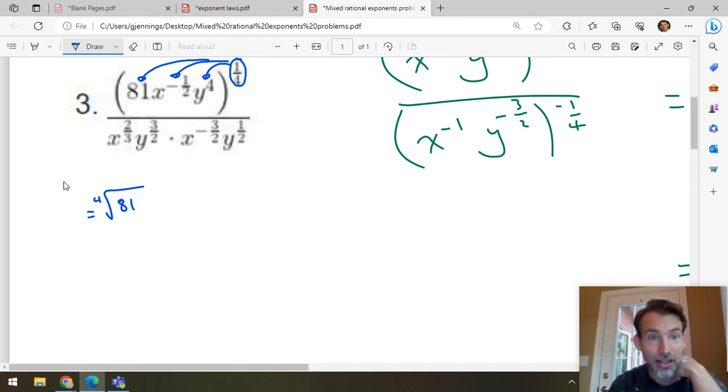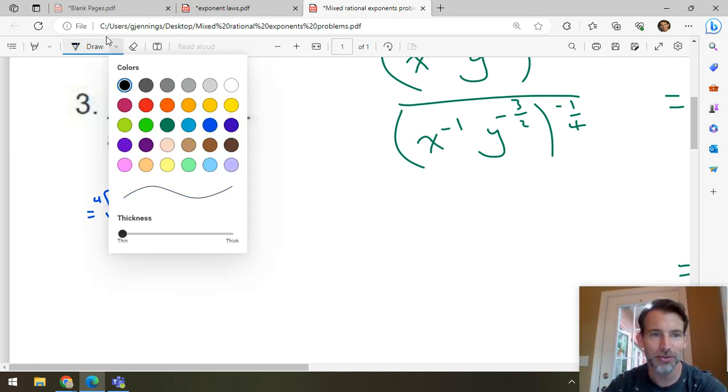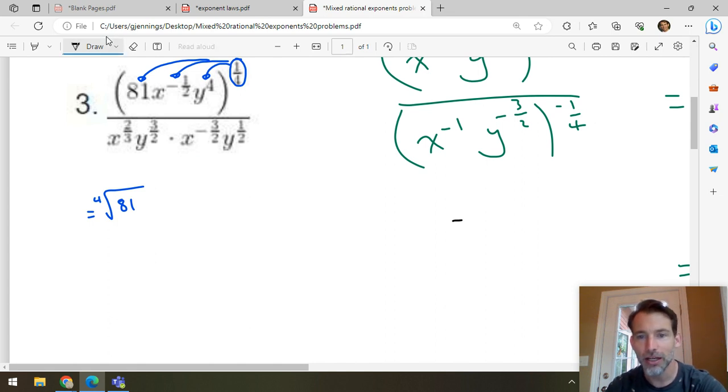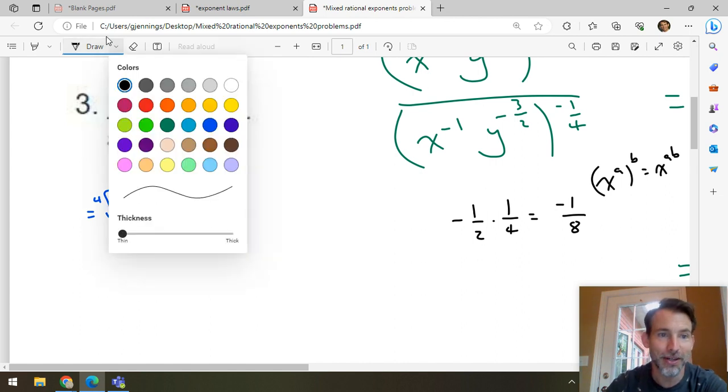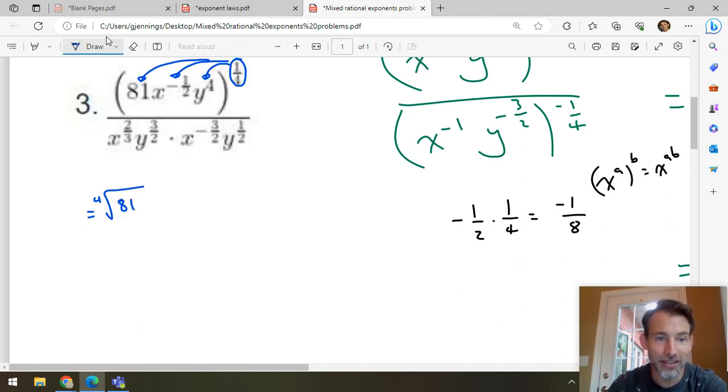X to the negative one half. Well, let me just do my rough work on the side here. Because Mr. Jennings told me that was a good idea. So, here I'm required to multiply negative one over two times one quarter. I find that to be negative one eighth. Because I'm using this property again. X to the A to the B is equal to X to the AB. So, we've got ourselves here, X to the negative one eighth. Y to the one. Because four times a quarter is a one.